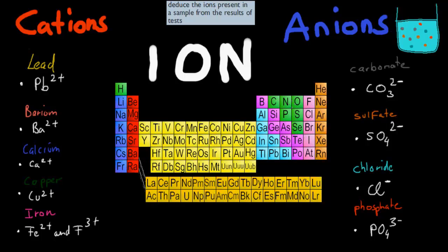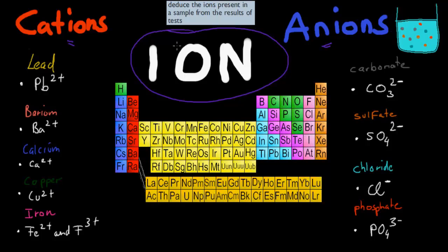So we're on to the next part. The last part we talked about anions. In this part we're going to talk about the cations. Remember that ions are a charged particle, either negatively charged in the form of anions or positively charged in the form of cations.